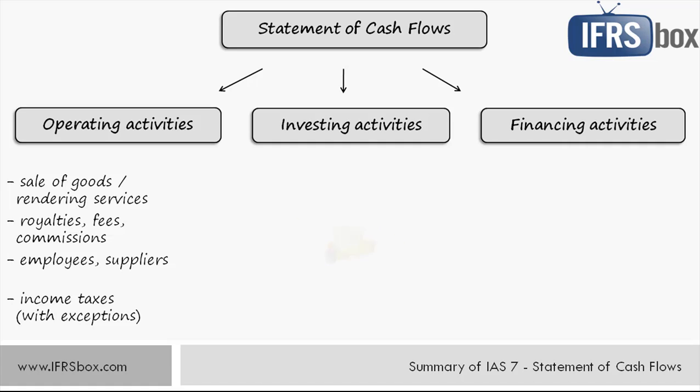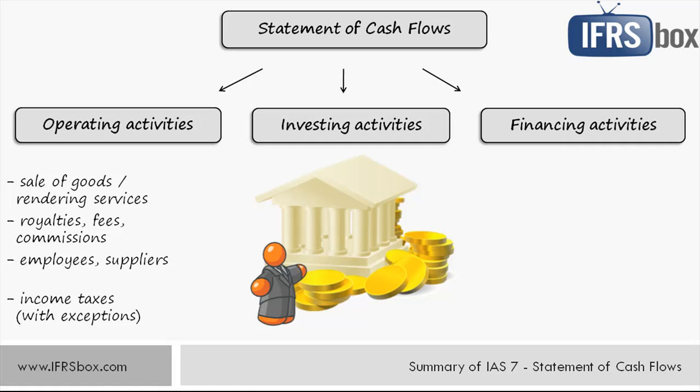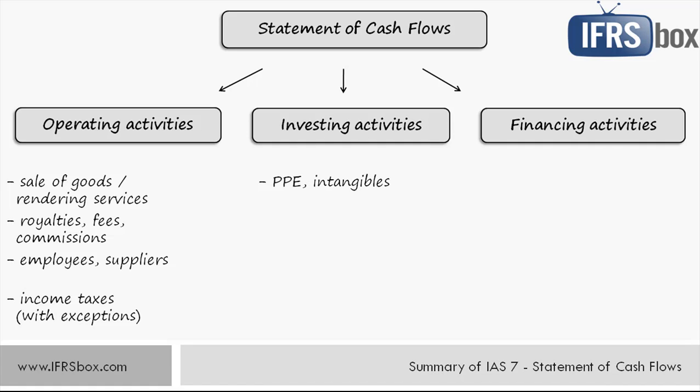Investing activities represent the acquisition and disposal of long-term assets and other investments not included in cash equivalents — basically cash payments to acquire property, plant and equipment, intangibles, and other long-term assets. If an entity is developing assets itself, payments related to development costs and self-constructed property also enter this section. Equally, proceeds from sale of such assets are part of investing activities. Payments to acquire or receipts from sale of equity or debt instruments of other entities or interests in joint ventures also belong here — but if you buy shares just to sell them later for trading purposes, that is an operating activity, not investing.